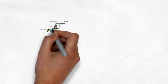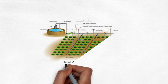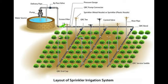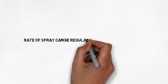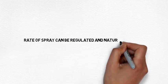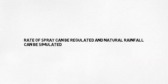This system consists of sprinkler heads or nozzles which are mounted on risers in lateral lines taken from main lines, which are further connected to a pumping unit. The rate of water can be regulated and natural rainfall can be simulated.